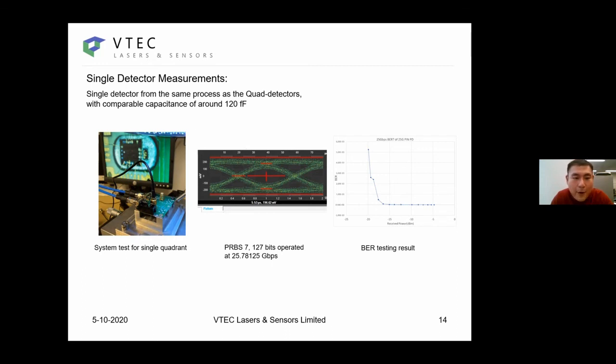We performed the single quadrant detector that has comparable active area size, which means the parasitic capacitance will be similar. We were able to get PRBS signals and get the open eye at 25G PRBS signals. We also performed some bit error rate testing of the device.